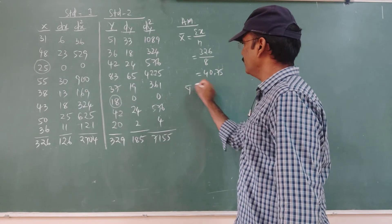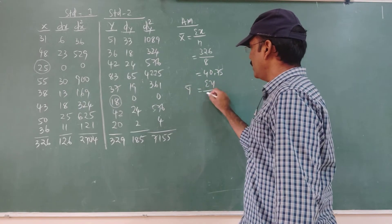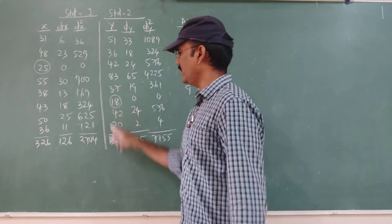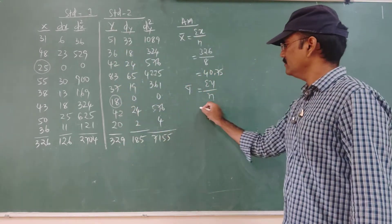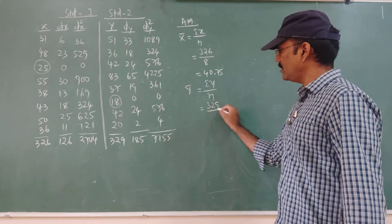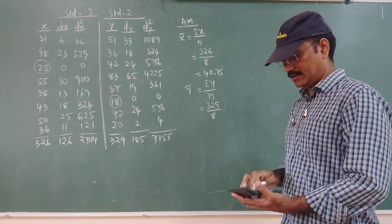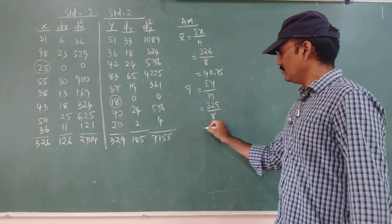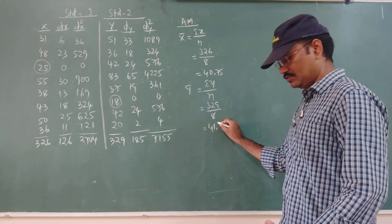Then ȳ = summation of y by n. The summation of y is 329. So 329 divided by 8 equals 41.125.